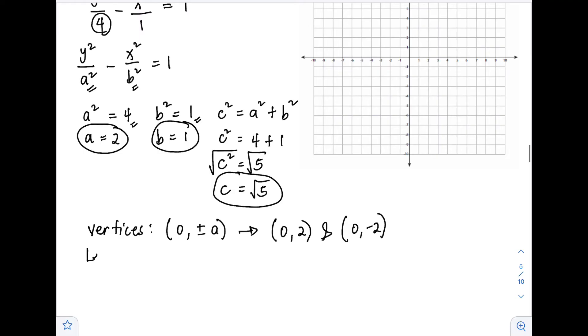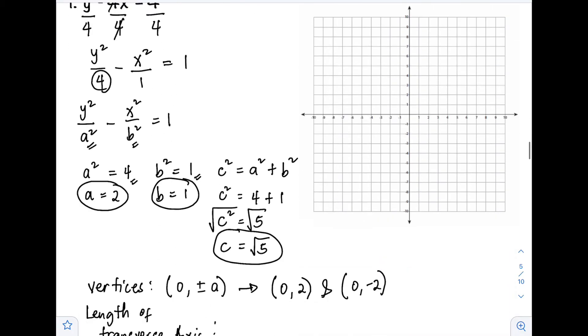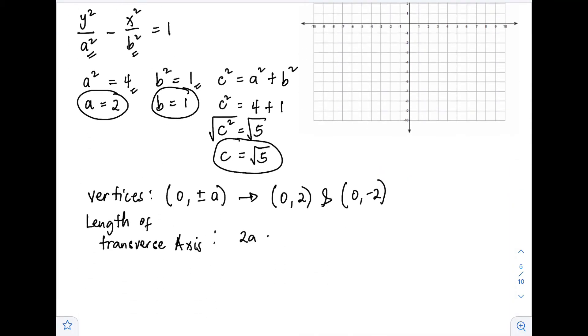Next is the length of the transverse axis. We know that the endpoints of the transverse axis are the same as our vertices. This time we need the length, which is equivalent to 2a. So 2 times a, our a is 2, so the length of the transverse axis is 4 units.